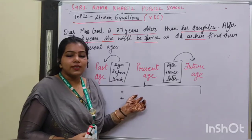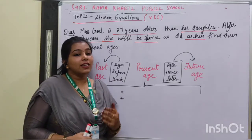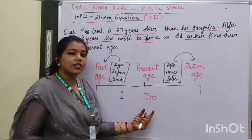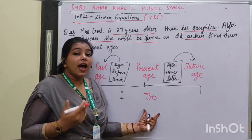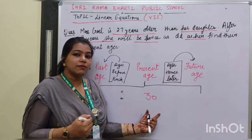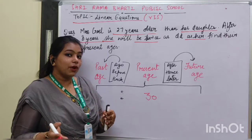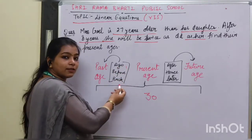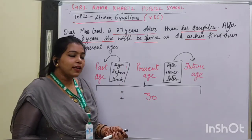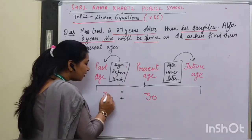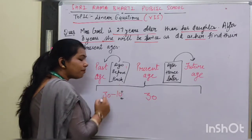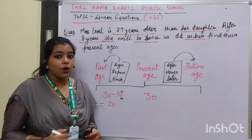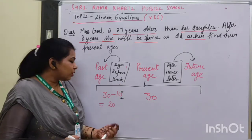Let's suppose my present age is 30 years. If I ask you to find my age before 10 years — or '10 years ago' or '10 years back' — all three phrases mean the same thing. What you will do is subtract 10 from my age to get my age 10 years back. So my age will be 20 years.